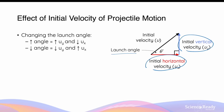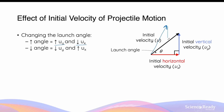The launch angle is the angle of the initial velocity vector above the horizontal axis. When we increase the launch angle, this will increase the initial vertical component of velocity and decrease the initial horizontal component of velocity, if we keep the initial velocity itself constant. So if we keep the initial velocity vector the same magnitude but increase the launch angle, this will result in a greater vertical component and a smaller horizontal component.